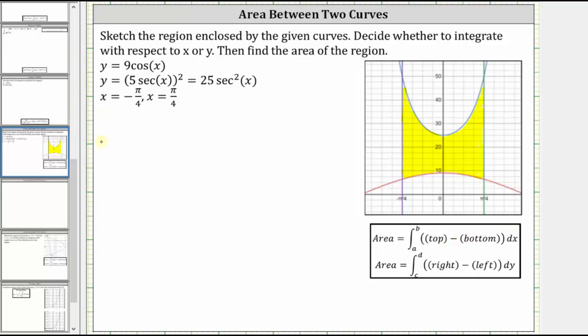Which means the area is equal to the integral from negative π over 4 to positive π over 4 of 25 secant squared x minus 9 cosine x.